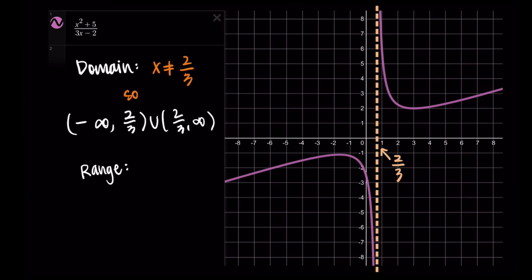For the range of this function, it's a little unique. There's a sort of empty space in the middle of the graph going from bottom to top. Using the graphing function precisely, I can see the range goes from negative infinity to negative 10 ninths, then from 2 to infinity. I also want to note that this rational function does not have any horizontal asymptotes — rational functions don't have to have them.